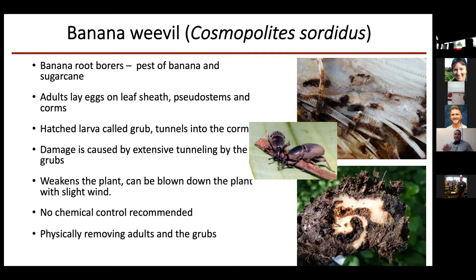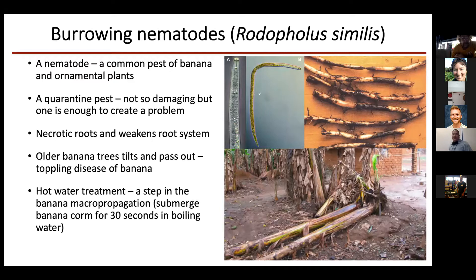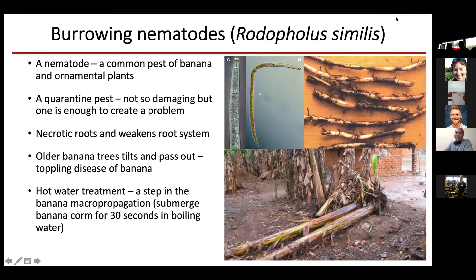The next pest is burrowing nematode. These two pests — banana weevil and burrowing nematode — are both soil pests, which is why they come one after another. Nematodes are very tiny and microscopic; you cannot see them with the naked eye. The burrowing nematode Radopholus similis is a quarantine pest. It means one pest is enough to trigger quarantine action if we need to export banana plants with roots and soil.